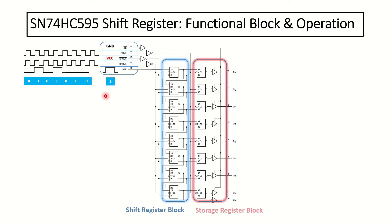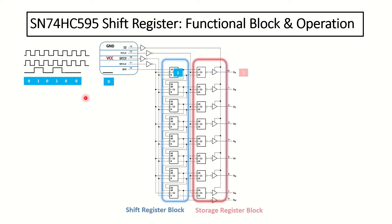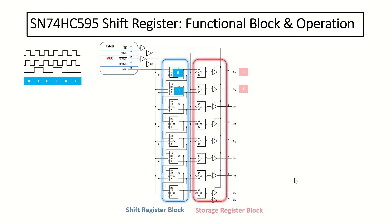At the first step, our serial input is at high voltage, representing a 1-bit. As soon as we trigger a clock cycle in the shift register clock pin, our first bit is inserted in the first stage of the shift register. As we trigger a clock cycle in the storage register clock pin, the bit stored in the shift register is inserted in the storage register, and since the output is enabled, we can observe this change in the output pins. In the next step, the serial input is at low voltage, representing a 0-bit. As soon as the SR clock is triggered, the input is inserted in the first stage, and the first stage's content is pushed or shifted to the next stage. As we trigger a storage register clock, the content of the shift register is inserted in the storage register and we can see the new output.